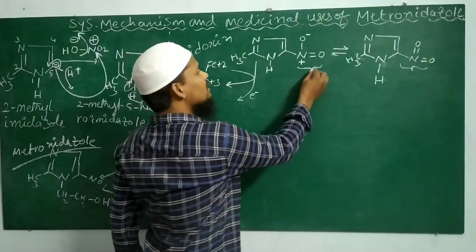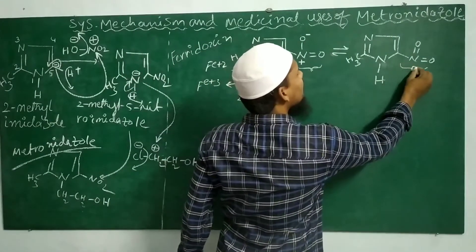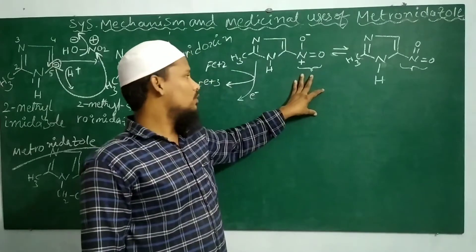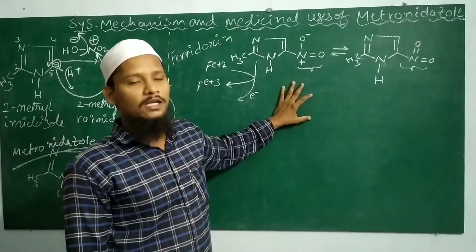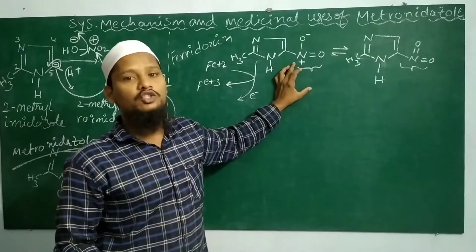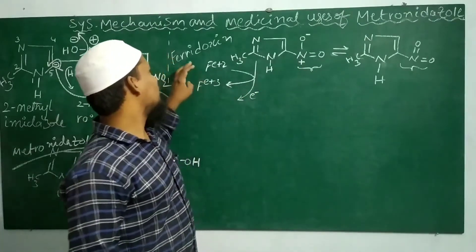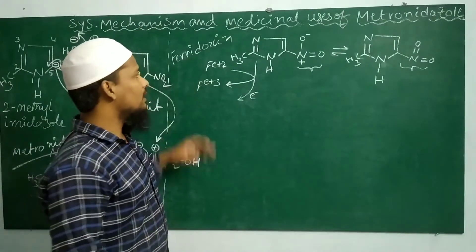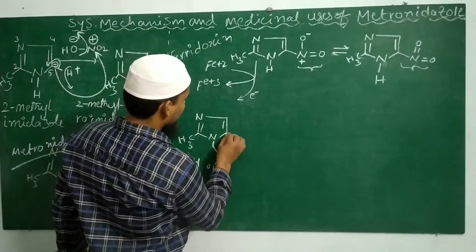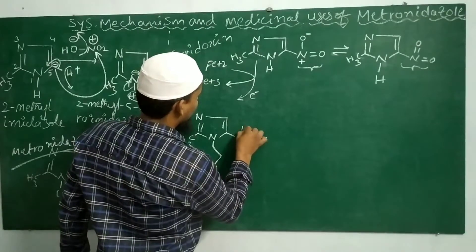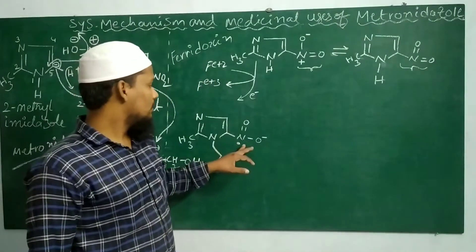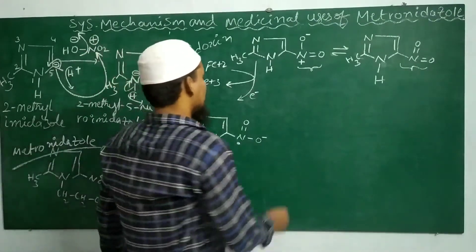The nitro group exists in an ionized form and a non-ionized form. The non-ionized form is not reactive. Taking the non-ionized form of the nitro group, metronidazole enters into the parasitic cell, where it is converted to the metronidazole radical anion with the help of the enzyme ferredoxin.